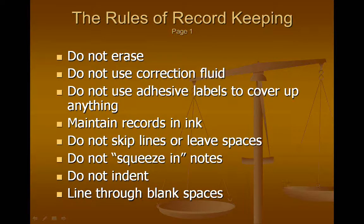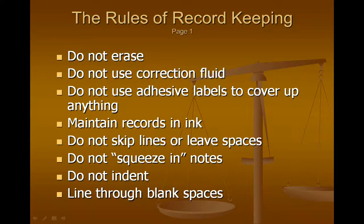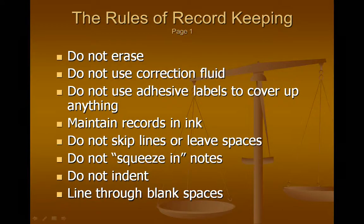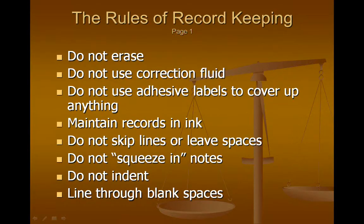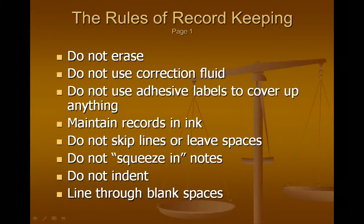Make corrections appropriately. Generally, in paper records, you draw a single line — don't try to obliterate the mistake, just strike through it. Then go down to the next entry, put today's date when you're making the correction, and refer back to the previous note explaining why you made the correction. You will make mistakes — that is a natural human thing, and people looking at records expect to see mistakes; they're suspicious when there aren't any. Be sure you make corrections in a way that's transparent so people can see when and why you made the correction.